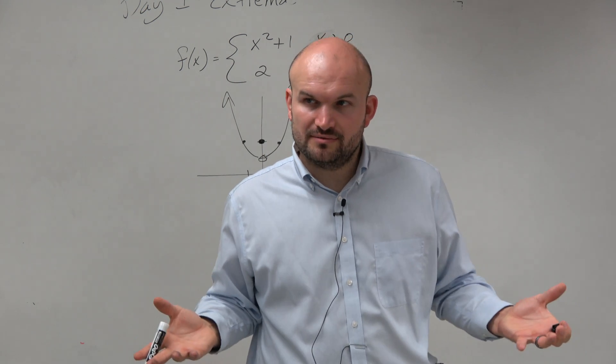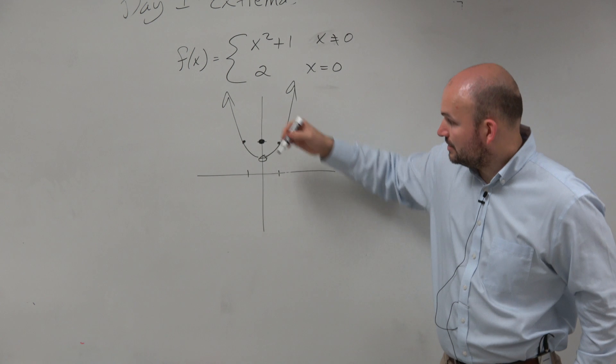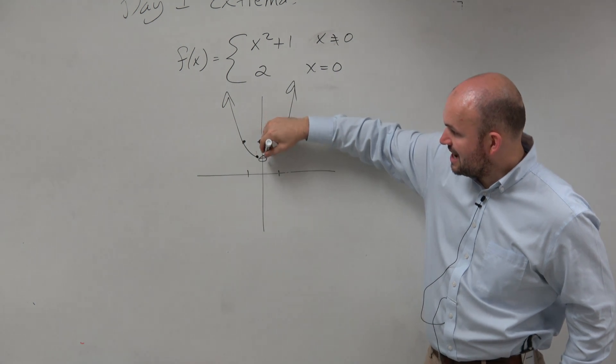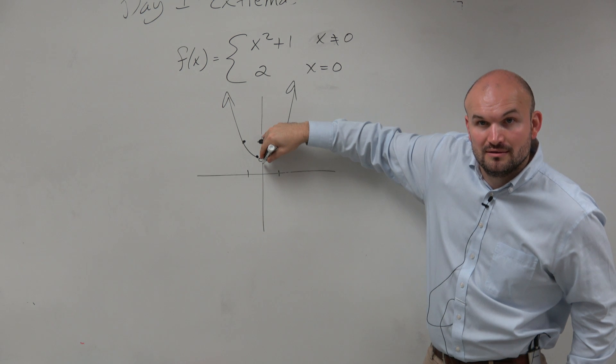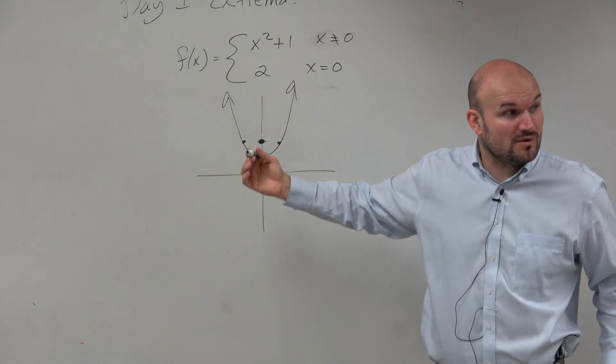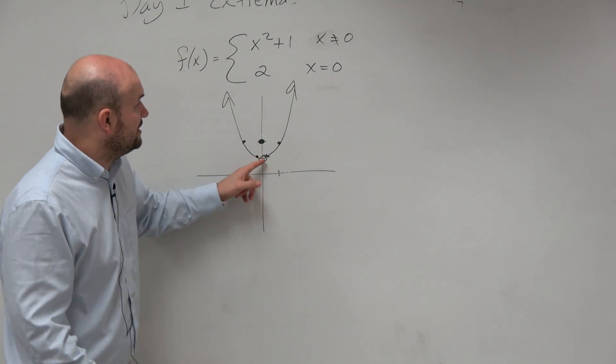So when we look at this graph, it's kind of interesting. Because we obviously remember any point to the left is higher than any point to the right. But that's an open circle again, right? We can't say the lowest value is 1, because the graph never actually touches 1.